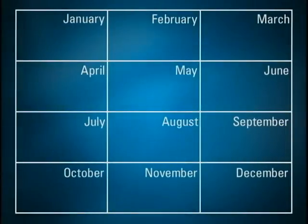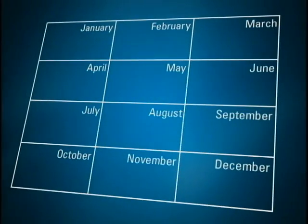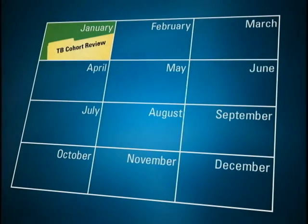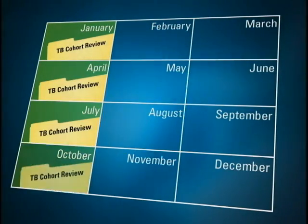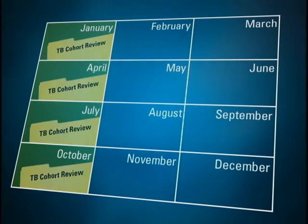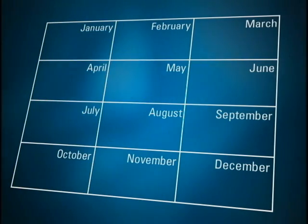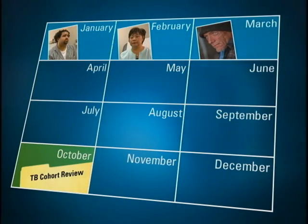When we conduct a cohort review, it involves a series of case presentations. The staff member responsible for managing each TB case presents patient case data to the rest of the TB program staff. Our cohort reviews take place four times a year, in the months of January, April, July, and October. That means that cases identified now will be presented in October.